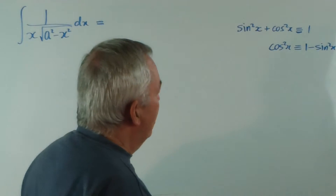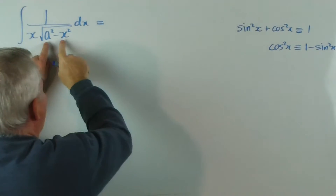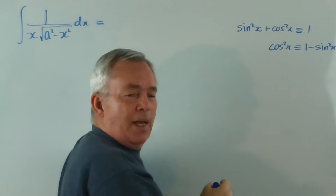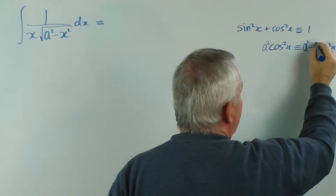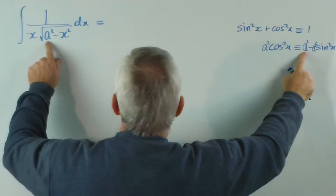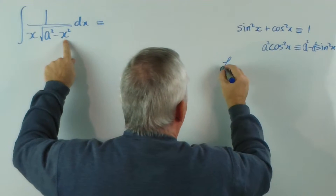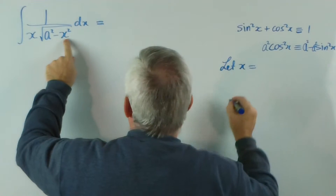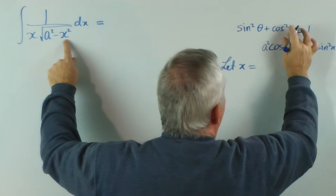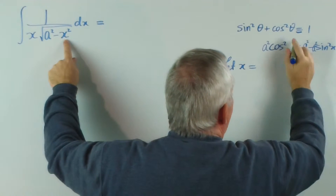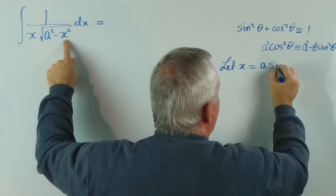Now, in order to change this expression here with the minus sign to look like this, I could multiply everything by A squared. So now I've got A squared minus something. I should have used theta here — let's do that. So let x equal A sine theta.